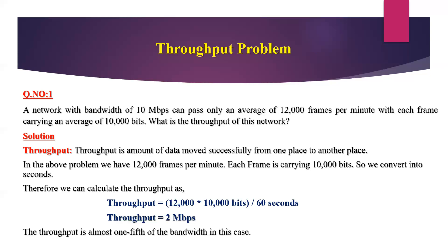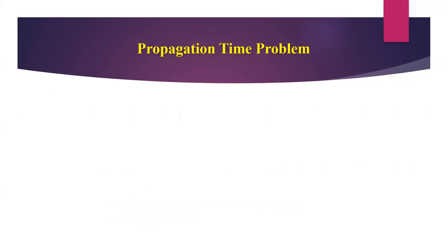The throughput is almost one-fifth of the bandwidth in this case, because the bandwidth is 10 Mbps and the throughput equals 2 Mbps — one-fifth of bandwidth. Next, we will move on to another concept: the propagation time problem, and how to calculate propagation time.